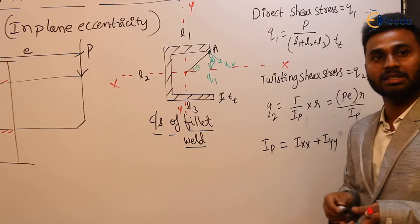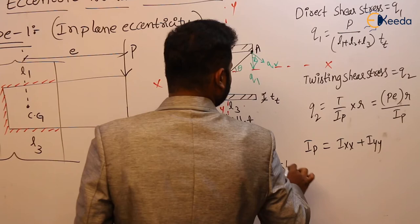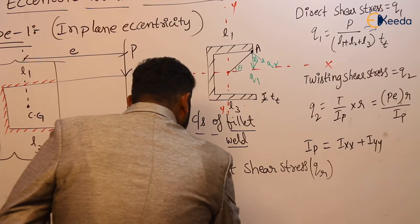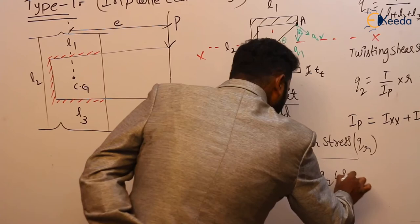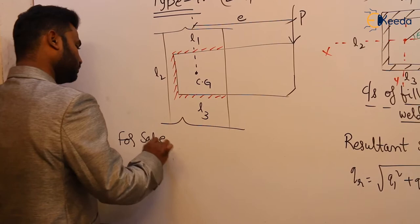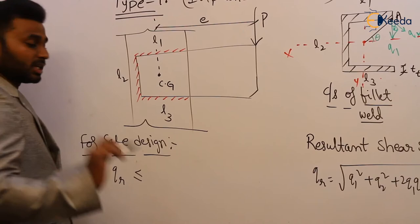After calculating q1 and q2, we can calculate the resultant shear stress. Apply the parallelogram law: qr = √(q1² + q2² + 2·q1·q2·cosθ). Everything is known to us — q1, q2, and cosθ — so we can find qr. For safe design, this qr, due to external applied load, should be less than or equal to the permissible shear stress.